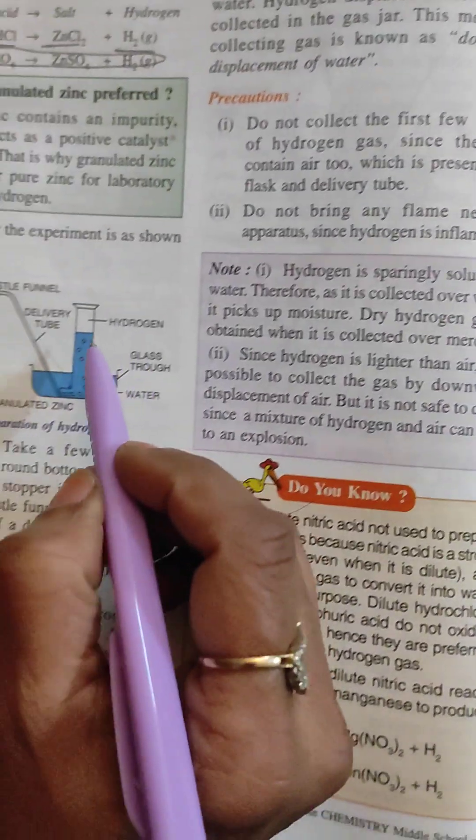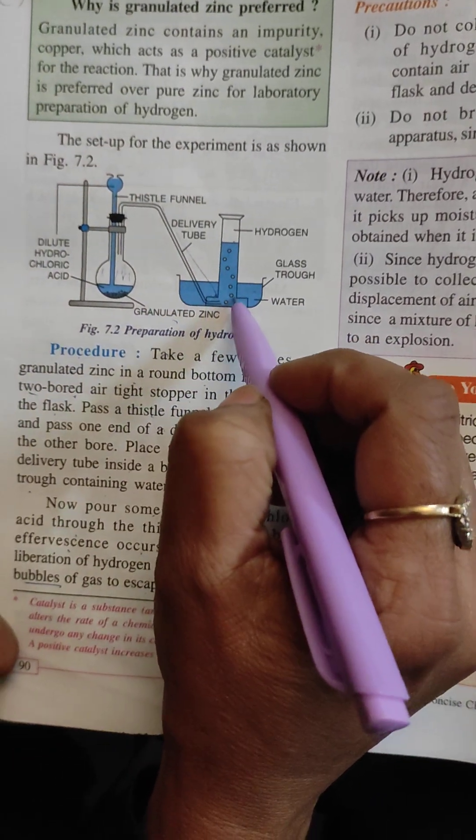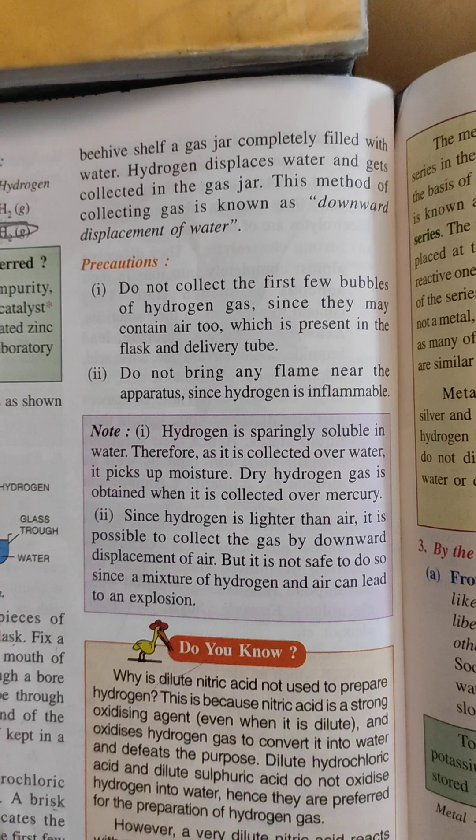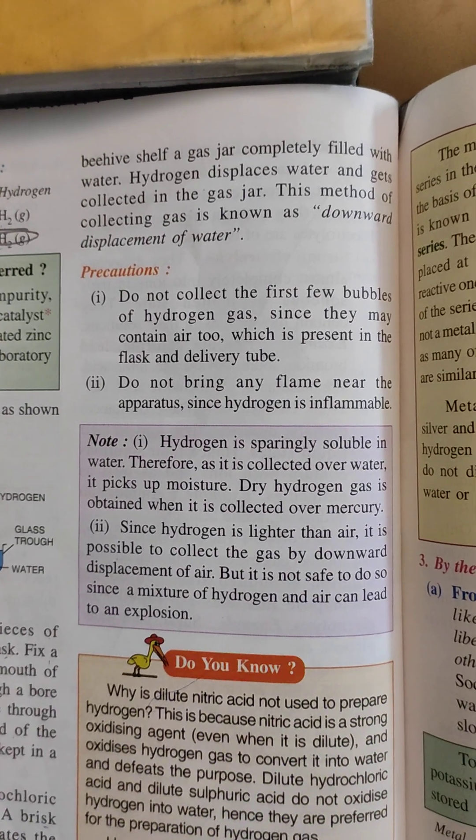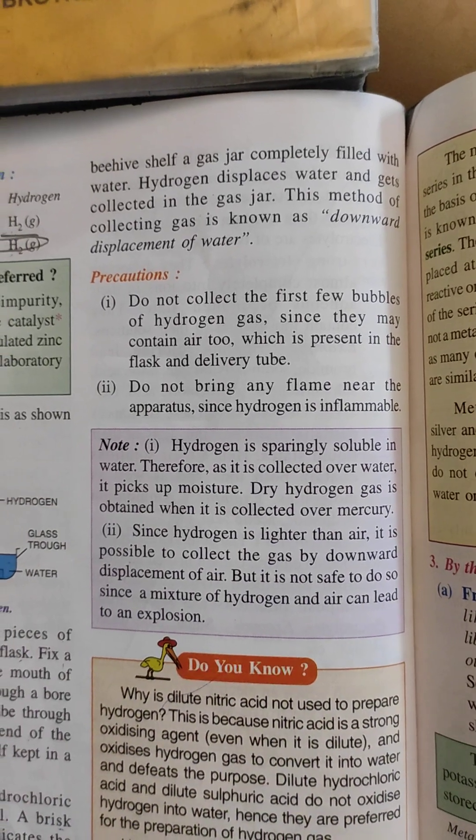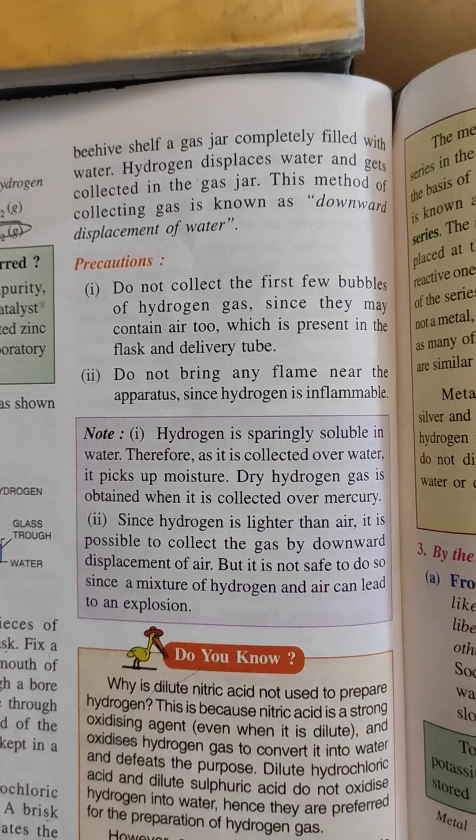Then invert the gas jar on the top of the beehive shelf. So then what happens here? Read next. Hydrogen displaces water and gets collected in the gas jar. This method of collecting gas is known as downward displacement of water.